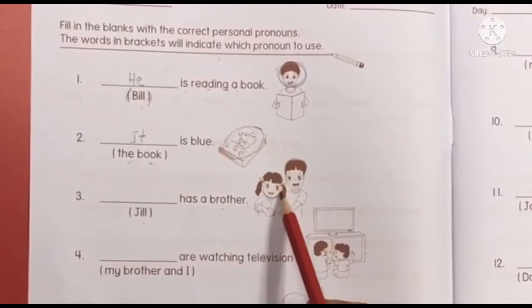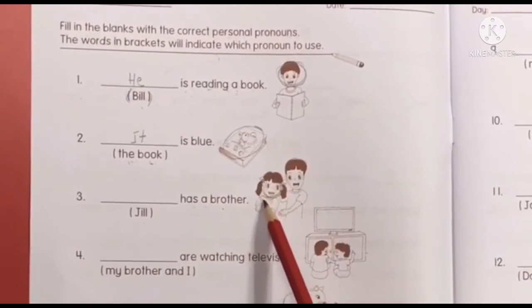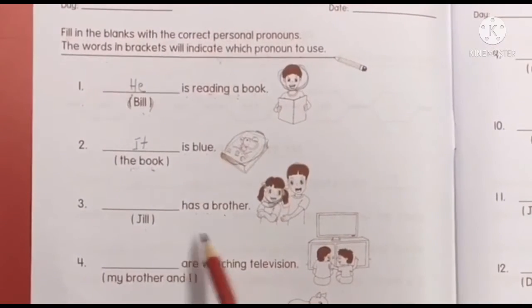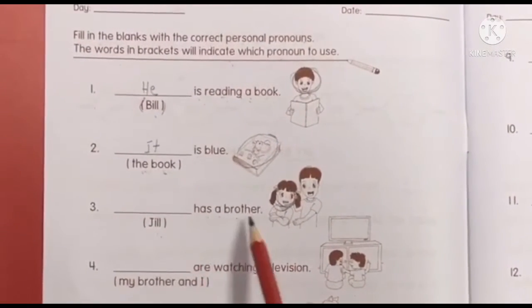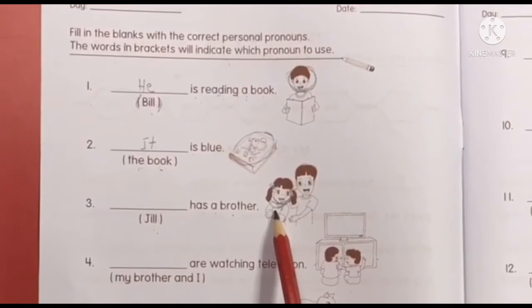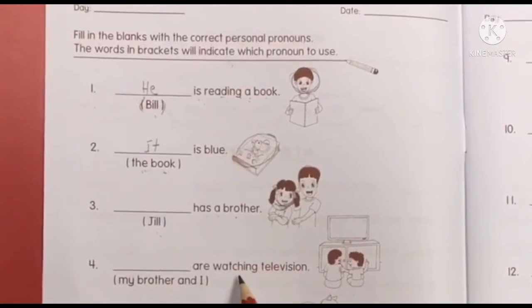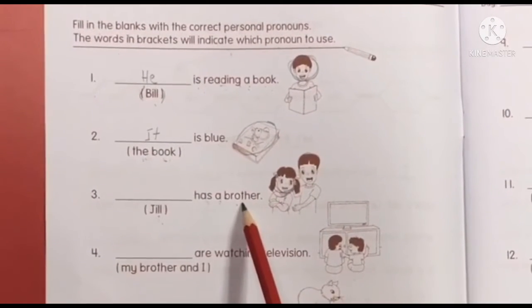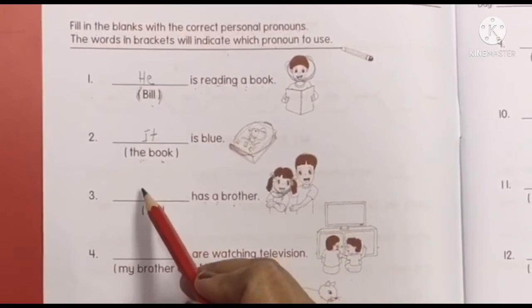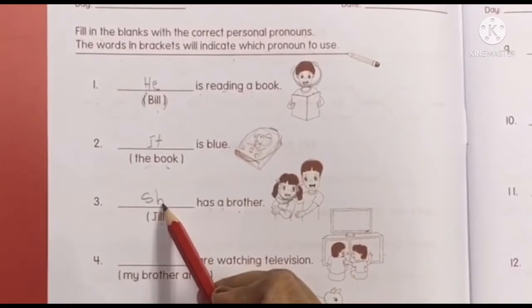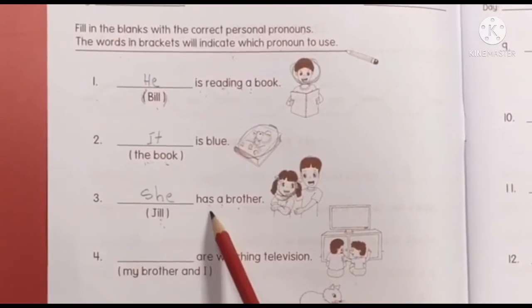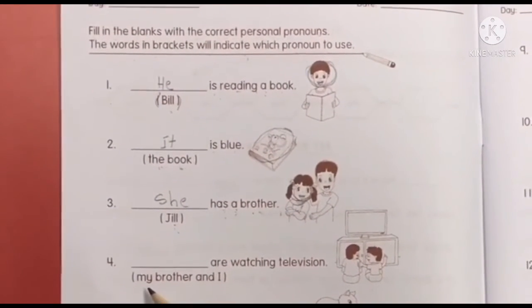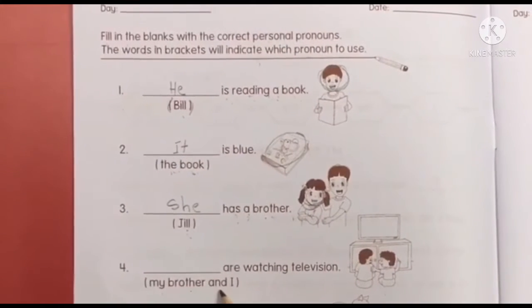The next one — Jill. Jill has a brother. Jill is a girl. So the personal pronoun for Jill is he, she, or we? 'She!' So, 'She has a brother.'